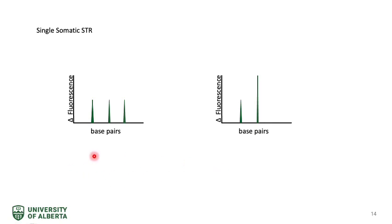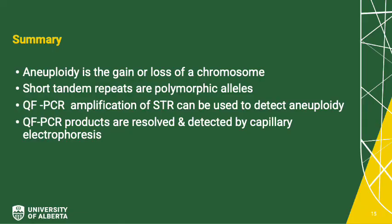In summary, aneuploidy is the gain or loss of a chromosome. In the clinical lab, we amplify short tandem repeats by quantitative fluorescence PCR to detect aneuploidy. STRs are short sequences of nucleotides that are repeated multiple times and are polymorphic. QF-PCR products are resolved and detected by capillary electrophoresis.